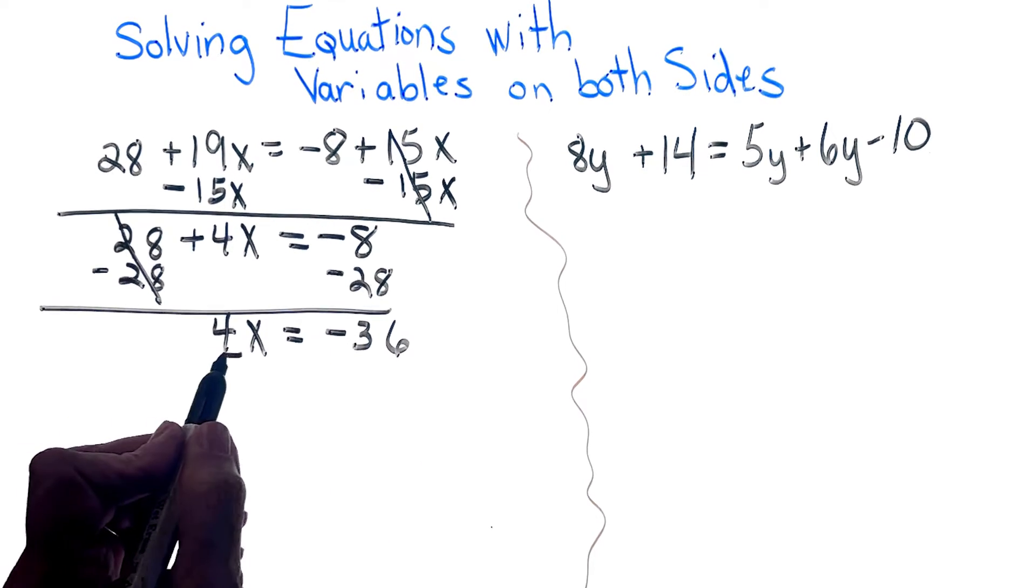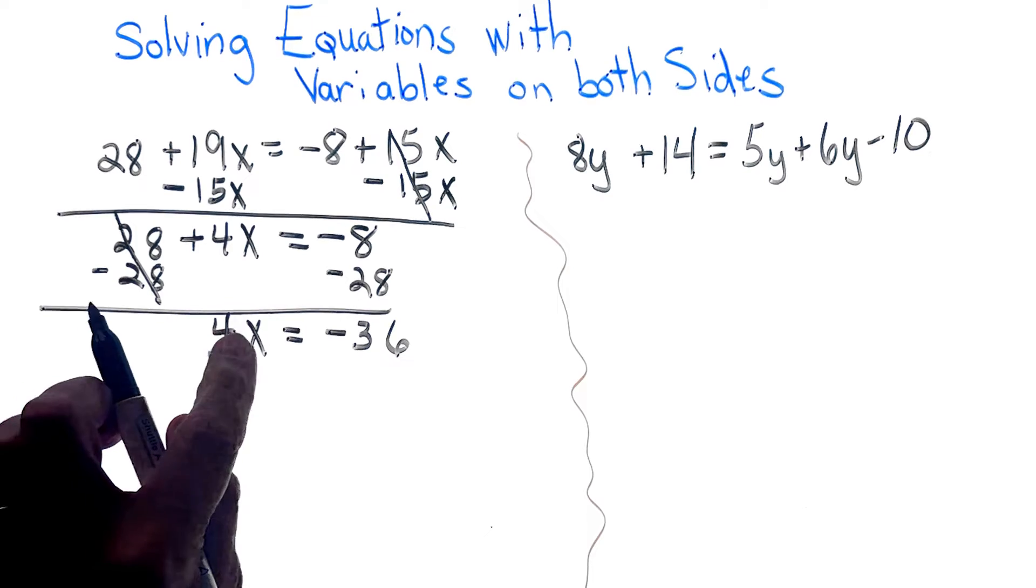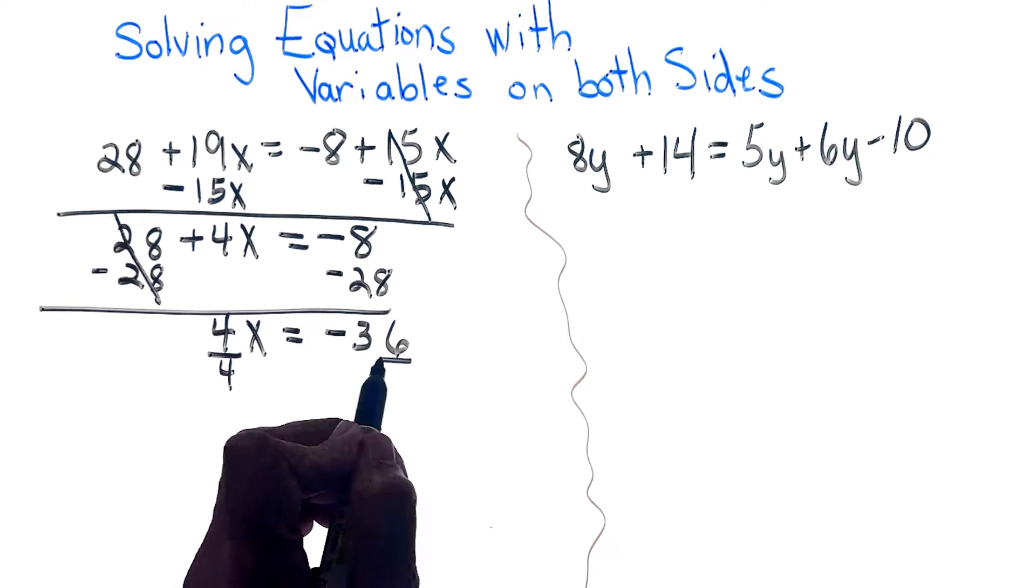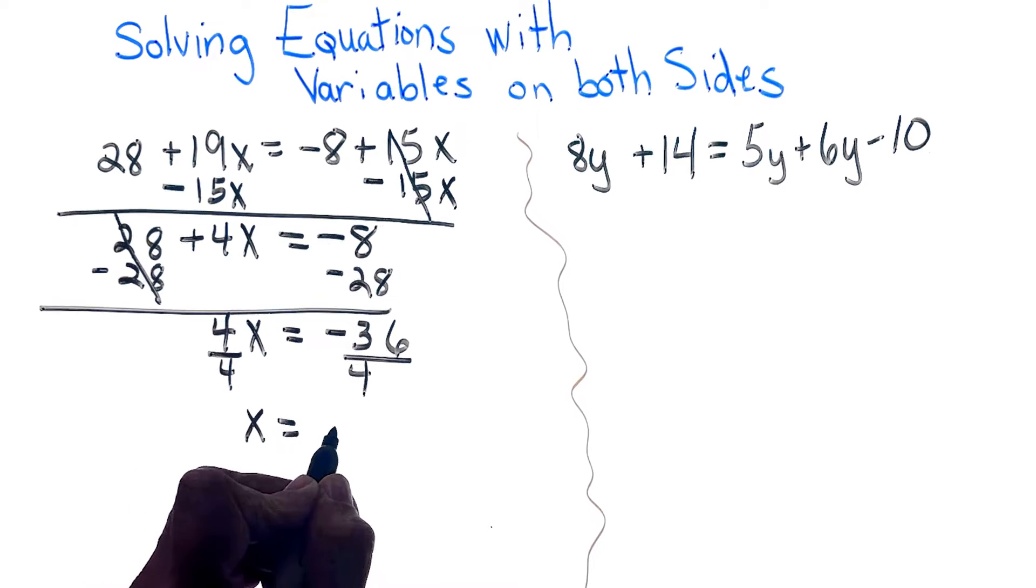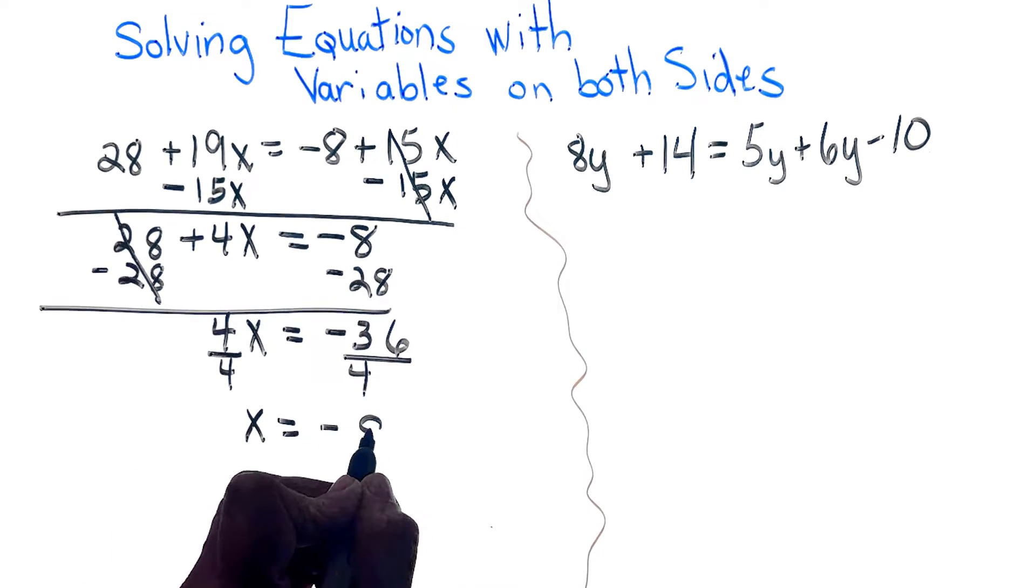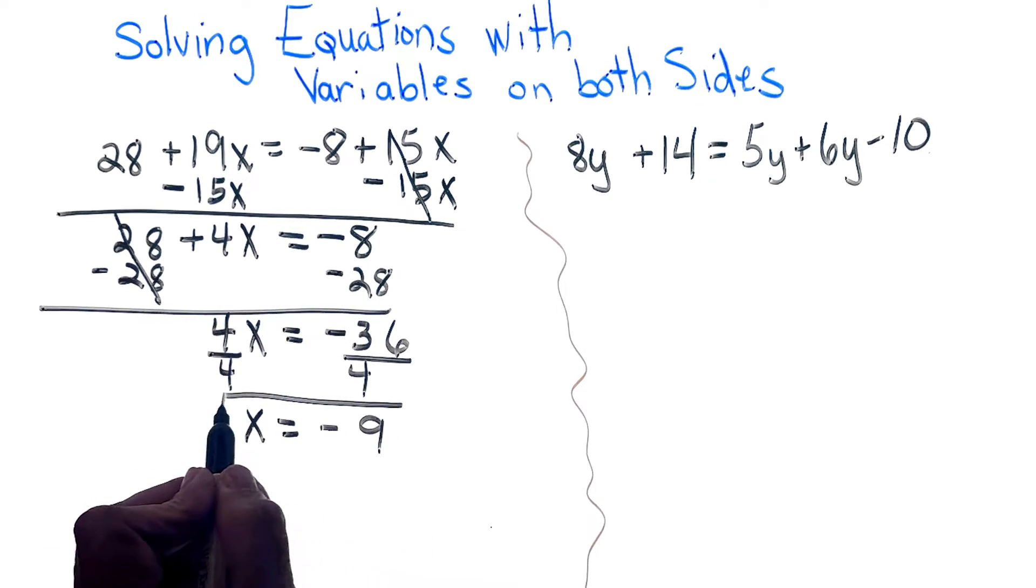Finally, I'm going to divide, because this is multiplication, both sides by 4. And x is equal to a negative 9. There's your solution.